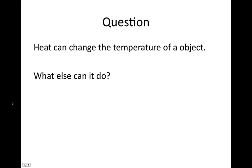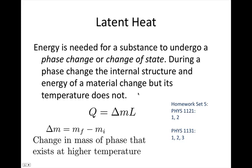Heat can also change the state of an object. Latent heat is the energy needed for a substance to undergo a phase change. During a phase change, the internal structure and energy change but temperature does not. Q equals delta m times L, where delta m is the change in mass of the phase that exists at the higher temperature — for example, the mass of water formed when ice melts.